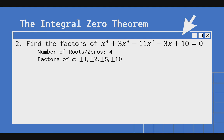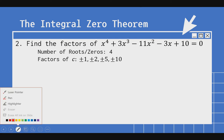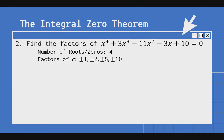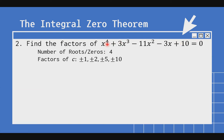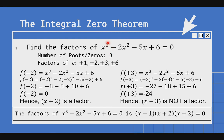Hopefully maayos ang ating example number 2 at last example. Dito, ang ating constant term c ay positive 10, at ang highest exponent is 4. Kaya ang number of roots at zeros ay 4. Doon nga pala sa example 1, 3 ang ating number of roots. Ang factors natin ay x minus 1 times x plus 2 times x plus 3. Ang roots natin ay negative 2, negative 3, at positive 1.